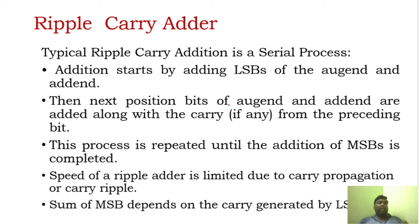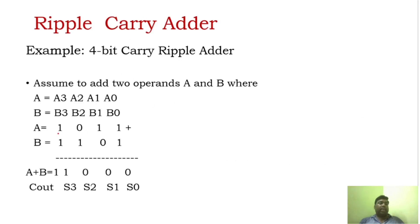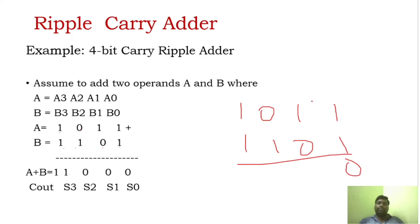Now you will see what is the operation of ripple carry adder. In order to add, you have an augend and addend operation. Let me take this particular example. I take numbers A and B, where A is A0, A1, A2, A3 and B is B0, B1, B2, B3. This is a 4-bit binary number. So this can be added using a 4-bit ripple carry adder.